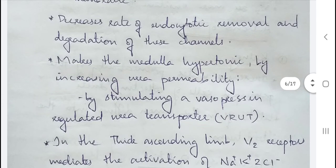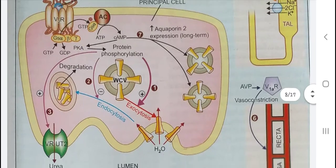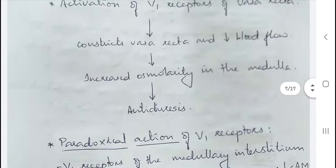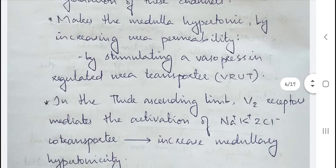Another mode of action is making the medulla hypertonic by increasing urea permeability, stimulating a vasopressin-regulated urea transporter. The phosphorylated proteins increase activation of these transporters, which increases urea permeability to the medullary interstitium, thereby increasing medullary osmolarity. When the medulla becomes more hypertonic, more water reabsorption results and antidiuresis takes place.